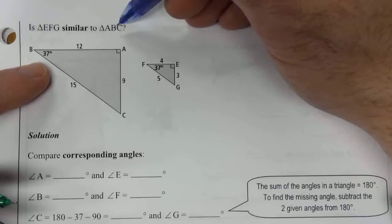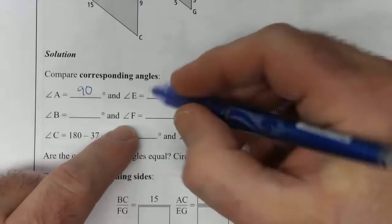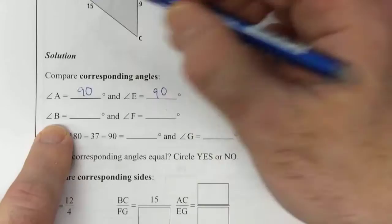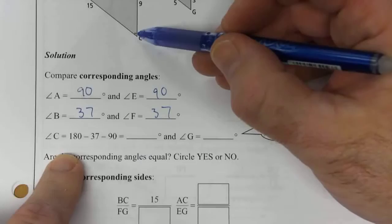So we can compare them. Angle A is 90 degrees. Angle E is 90 degrees. So they're the same. Angle B is 37 degrees, and angle F is 37 degrees. Now we're not told what angle C is, but we can actually calculate it.